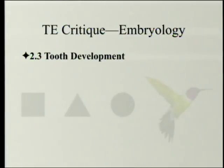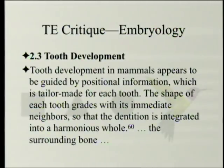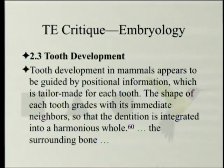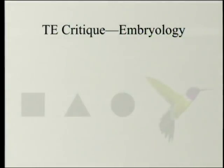Tooth development in mammals appears to be guided by positional information which is tailor-made for each tooth. The shape of each tooth grades with its immediate neighbors so that the dentition is integrated into a harmonious whole, and it is coordinated with the surrounding bone so that tooth sockets develop at the same time.